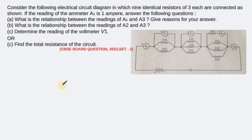Hello students, welcome back. Let's have a look at the next question from electricity — specifically from electrical circuits. Consider the following circuit diagram in which nine identical resistors of three ohm each are connected as shown.